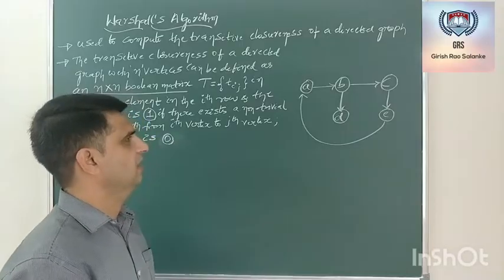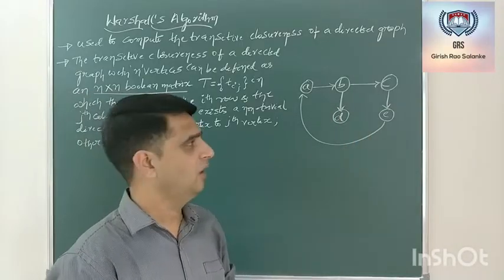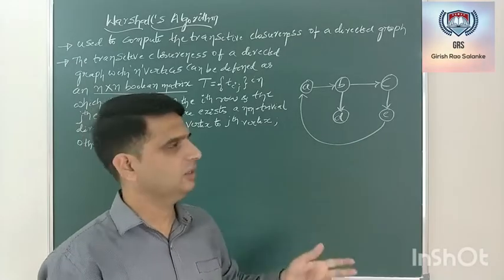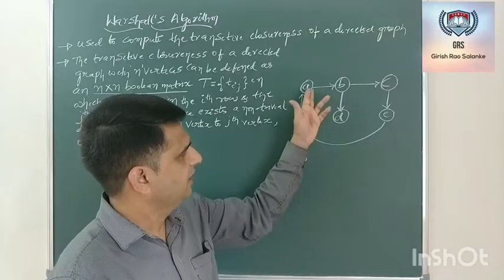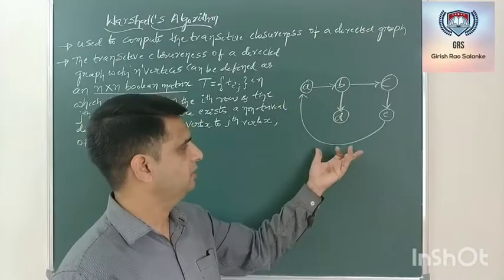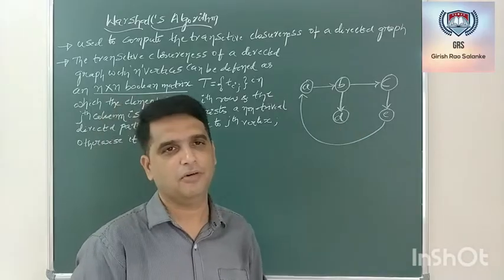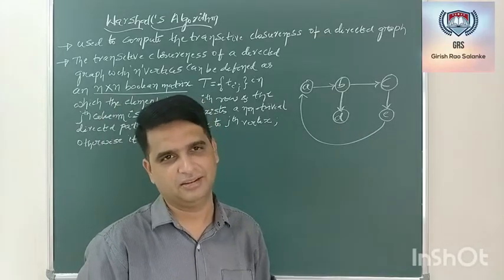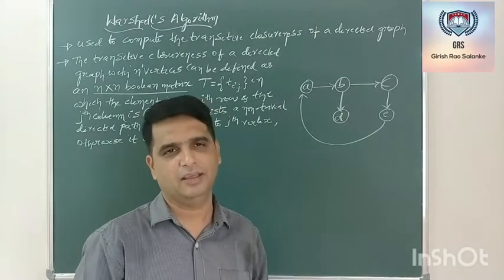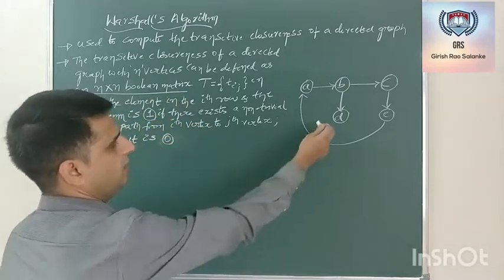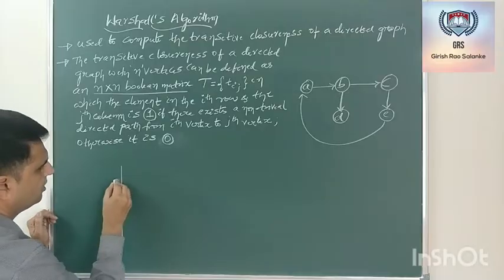This is a directed graph with five vertices and five edges. How to represent this particular graph? The edges are not having weight. So what I can do, I can represent this particular graph in the form of an adjacency matrix, wherein it gives information about whether an edge exists from a particular vertex to another vertex or not. I will write the adjacency matrix for this.